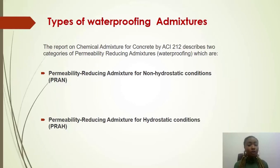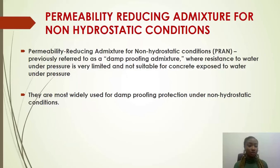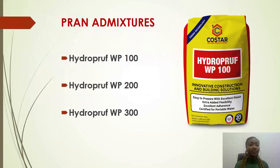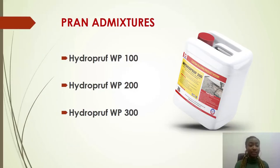The first category is permeability-reducing admixture for non-hydrostatic conditions, or PRAN. This category is not suitable for where you have hydrostatic pressure — that is, where the water pressure is high. They were previously referred to as damp-proofing admixtures, where resistance to water under pressure is very limited. They are not suitable for concrete exposed to water under pressure. The products under this category from Costa Chem are Hydroproof WP100, Hydroproof WP200, and Hydroproof WP300.